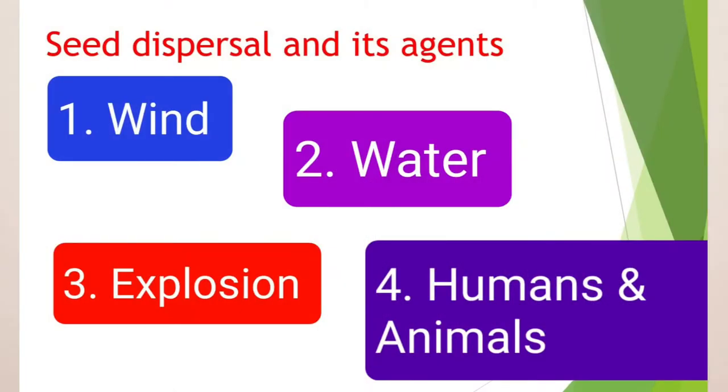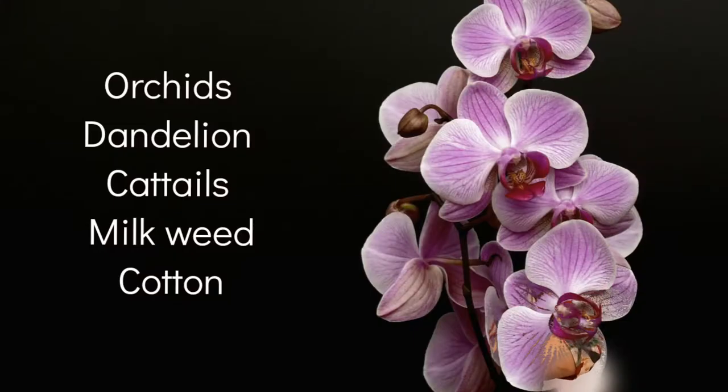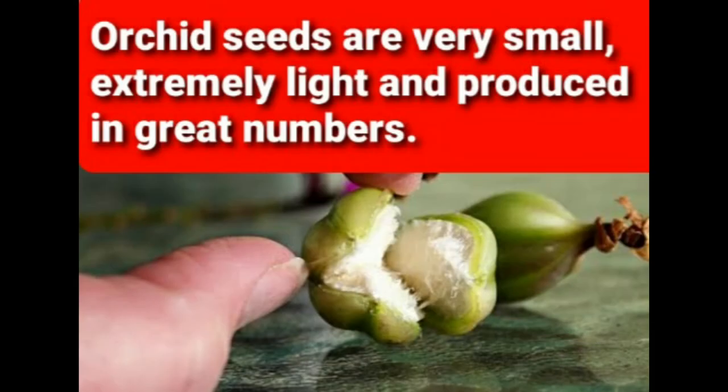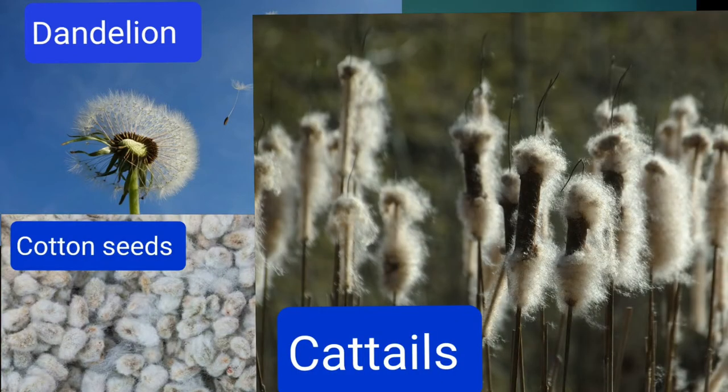The first agent we are going to discuss is seed dispersal by wind. How are seeds dispersed through wind? This is possible in the case of plants whose seeds are small and lightweight. Examples include orchids, dandelions, maple, cotton, and cattail. Some seeds have hair around them, such as dandelions, cotton, and cattail, so they are easily blown away by the air. There are also certain seeds which have wing-like structures, like maple and drumstick, which also get blown away by the air very easily. This is how their seeds are dispersed far from the parent plant.